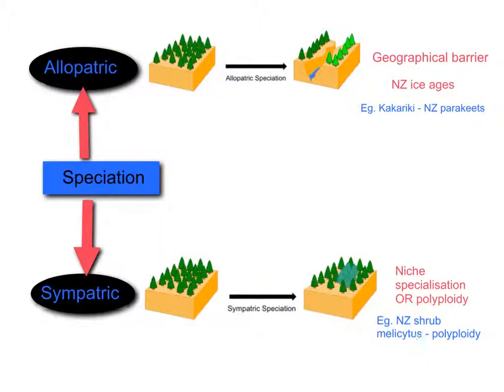An example of sympatric speciation in New Zealand is the malachite shrub, which occurred through polyploidy. It originally doubled its chromosome number to become triploid, then underwent amphipolyploidy to stabilise its chromosome number and allow it to become fertile, resulting in a tetraploid — four copies of those sets of chromosomes, going from a chromosome number of 32 up to 64.